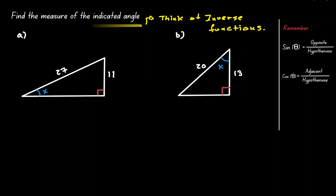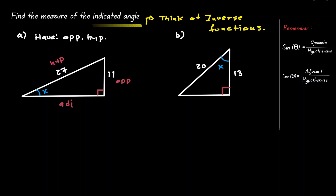In example A, let's start by looking at our reference angle. Based on this angle, let's label our triangle: the side opposite of 90 degrees is our hypotenuse, the side opposite the reference angle is the opposite side, and the side next to the angle is our adjacent. Based on this labeling we can see that we only have information about the opposite and the hypotenuse, so we'll use the sine function since it is defined as opposite over hypotenuse. The sine of our reference angle x equals the opposite, which is 11, divided by the hypotenuse, which is 27.